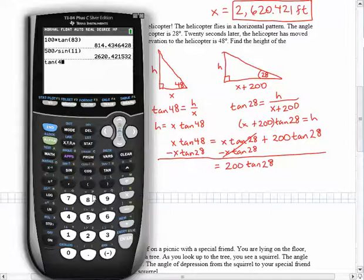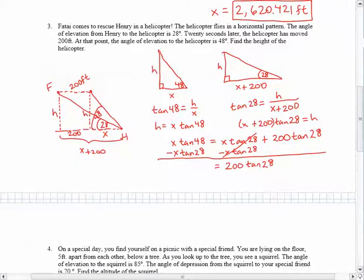So the tangent of 48 minus the tangent of 28 gives me 0.578. So this is 0.578x.